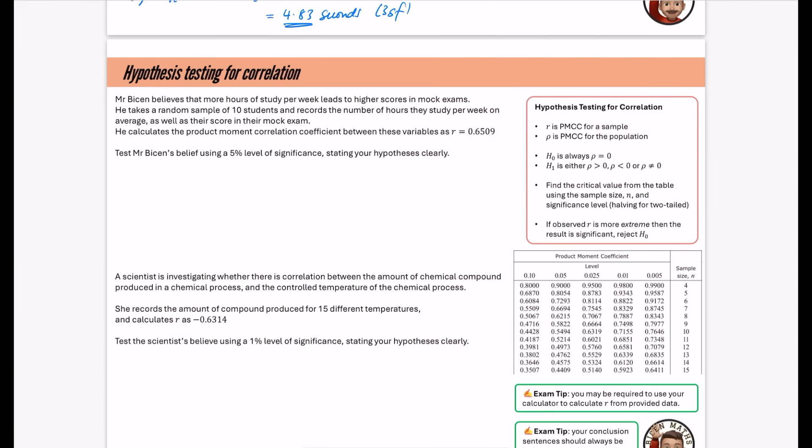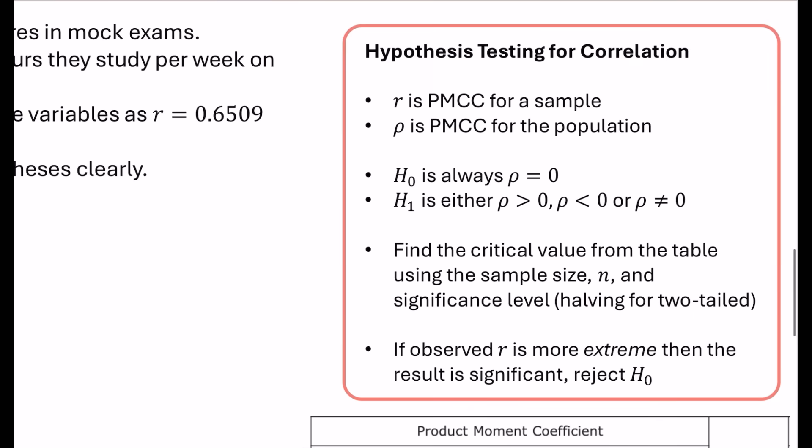And then this is really the proper stuff. The new stuff is hypothesis testing for correlation. So this is where somebody might think that there is a positive or negative correlation or no correlation. They take a sample to sort of figure out whether that correlation exists or not. Now, R is the PMCC for a sample. Rho here is the correlation coefficient for the entire population. The null hypothesis is always that there is no correlation. The population's correlation is zero. The alternative hypothesis is either that there is positive correlation, negative correlation, or the correlation is not zero. In other words, there is correlation. These ones are going to give you a one-tailed test, and this one here is going to give you a two-tailed test.